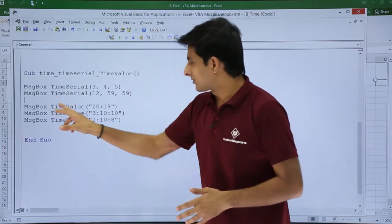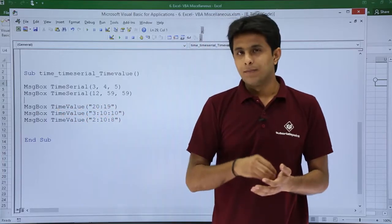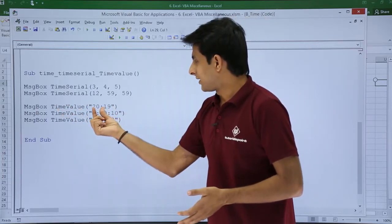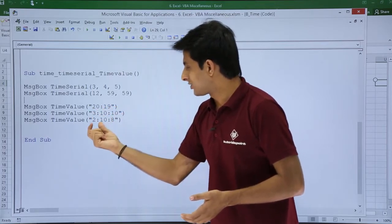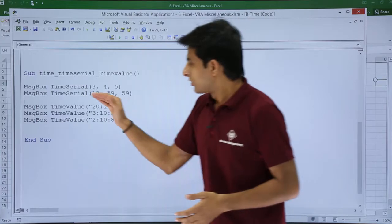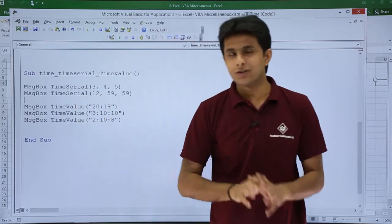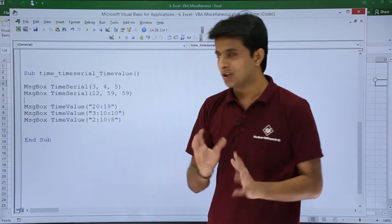Another method is if you see MsgBox TimeValue, and in brackets I have given hours and minutes. That is 20 hours and 19 minutes. Same way I have given 3 hours 10 minutes and 10 seconds, 2 hours 10 minutes and 8 seconds. The function is the same but the value I've just changed.